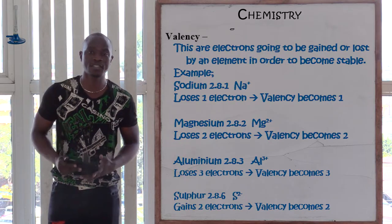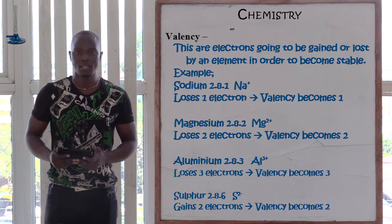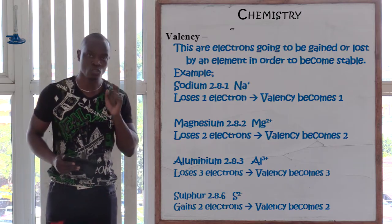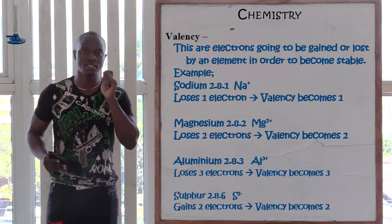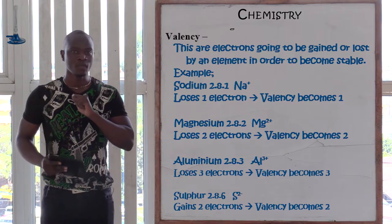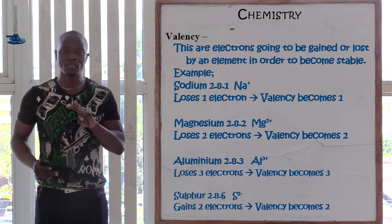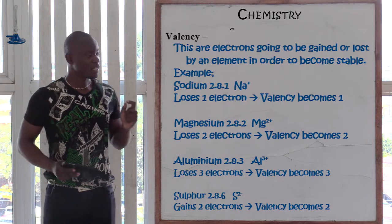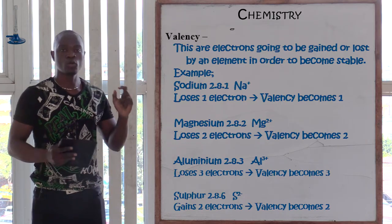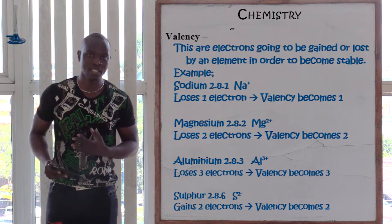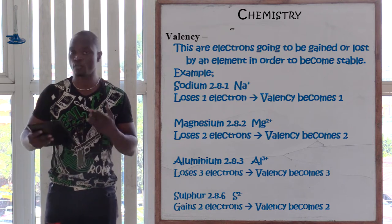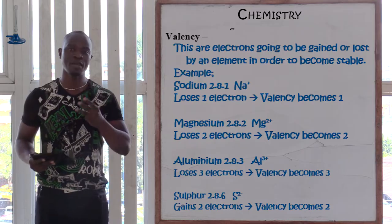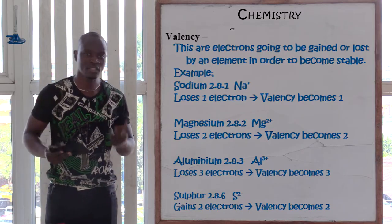The next one is aluminium, which is atomic number 13. The electronic configuration of aluminium is 2,8,3. Aluminium has three electrons in the outermost energy level. Since aluminium is going to lose these three electrons in the outermost energy level in order to become stable, the valency of aluminium becomes three.